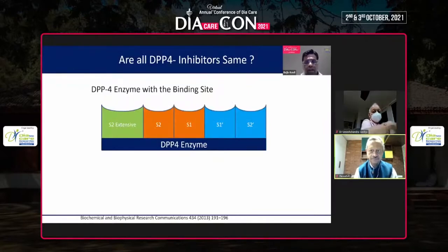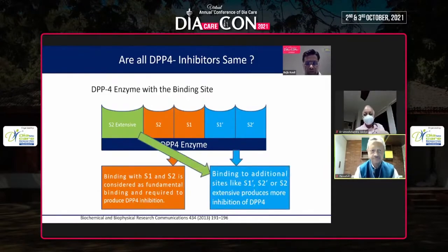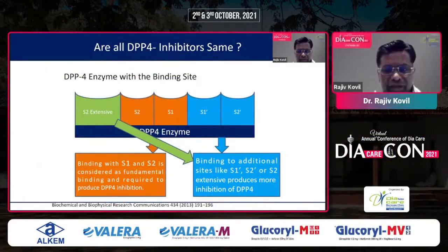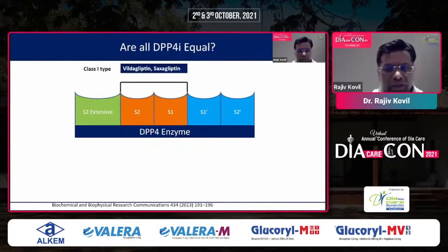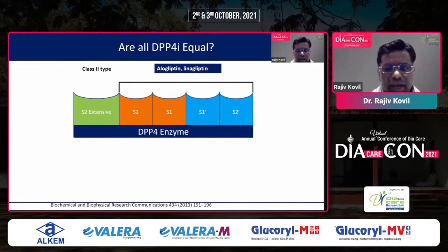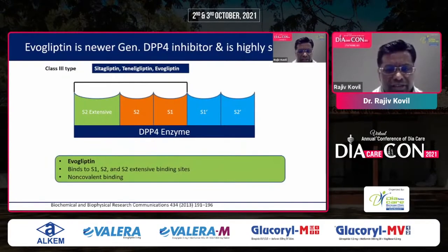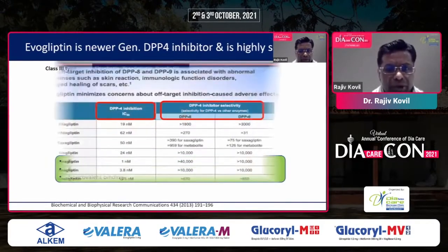If you look at the DPP4 enzyme binding site, this makes the difference between various DPP4 inhibitors. S1 and S2 are considered fundamental binding required to produce DPP4 inhibition. Vildagliptin and saxagliptin bind exclusively to S1 and S2. Alogliptin and linagliptin, in addition to S1 and S2, also bind to the extended S2 extensive site. Similarly, teneligliptin and evogliptin also bind to the extra S2 extensive site via non-covalent binding.